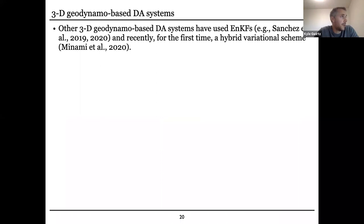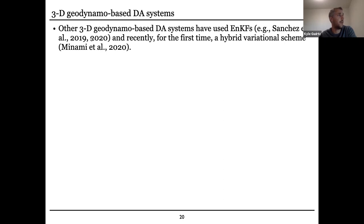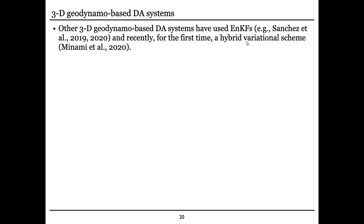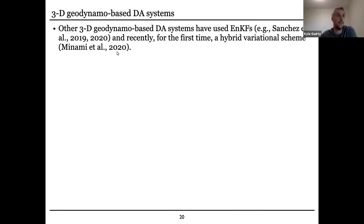There are now several other DA systems using these dynamo models. A lot of them use ensemble Kalman filters — one such system has been described in a couple of papers by Sabrina Sanchez. Recently, for the first time, a hybrid variational scheme was used by a group in Japan. In fact, both of these systems are also contributors to the recent IGRF release.